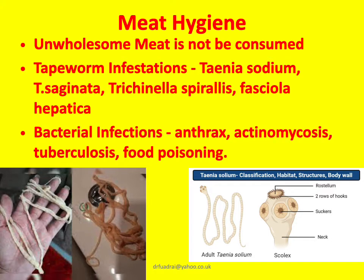Unwholesome meat is not to be consumed. We focus on meat hygiene to prevent the spread of diseases if the animal whose flesh is being utilized for eating has some disease. Meat can spread tapeworm infestations, including Taenia solium, Taenia saginata, Trichinella spiralis, and Fasciola hepatica. There are also bacterial infections which include anthrax, actinomycosis, tuberculosis and food poisoning. All these diseases can be transmitted through sick animals which have been slaughtered in slaughterhouses.